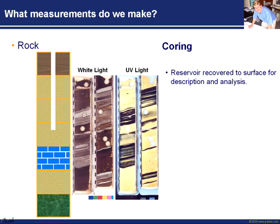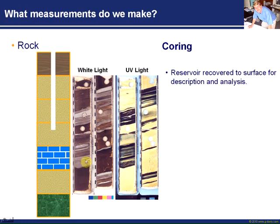We can make a description and run some analysis on it. Here is the same piece of core. These images here on the left-hand side are under normal white light, and you can see that this rock here is actually sandstone, and it's stained dark with black oil. And these rocks here are the mud rocks, and you see that the oil stays between the mud rocks and the reservoir.